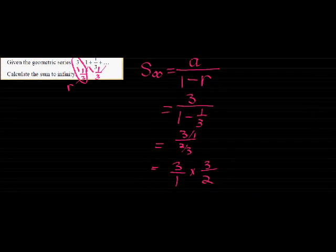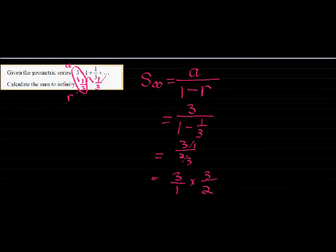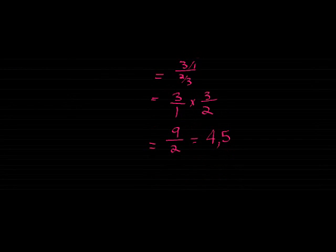So if I were to add up these numbers forever, 3 plus 1 is 4 already, plus a third is 4 and a third, plus a ninth is whatever that is, but eventually my answer will actually get to 4 and a half, if I had time.